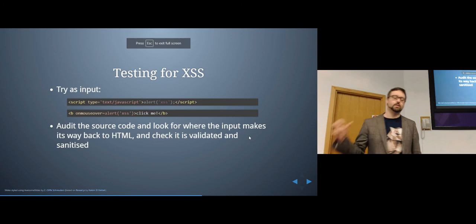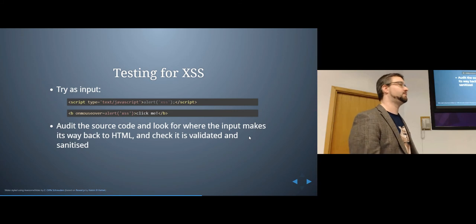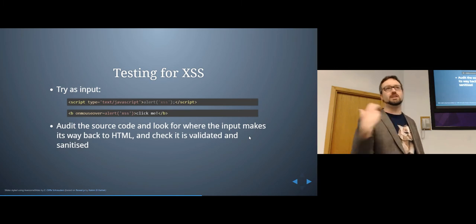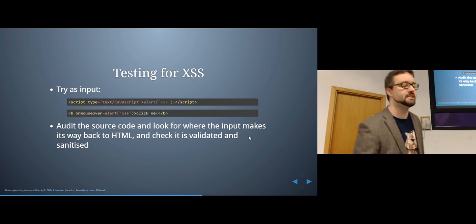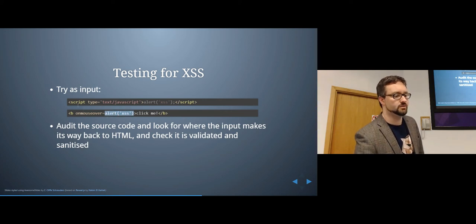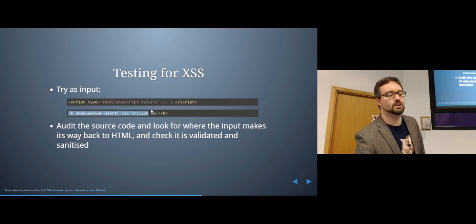When testing for cross-site scripting you can try entering a script tag to create an alert and see if it pops. There are more obscure approaches too — for example, adding a bold tag with 'click me' text and a mouseover event that triggers an alert. If the site only checks for the word 'script', this approach would circumvent that protection since it doesn't use a script tag.